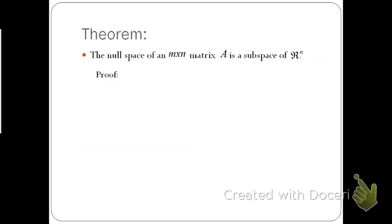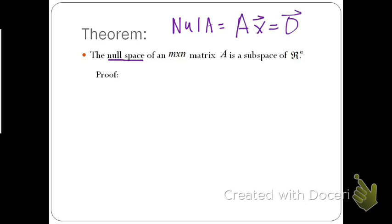We now have a theorem that the null space of an m by n matrix A is a subspace of Rⁿ. To prove this, we have to check that the zero vector is in the null of A, that it is closed under addition, and closed under scalar multiplication. The null space is just the null of A — when I have Ax, we should get the zero vector.